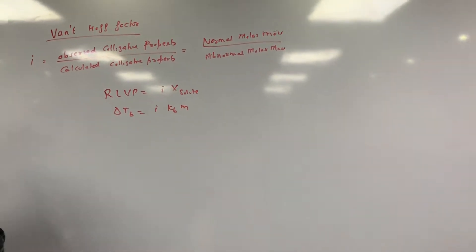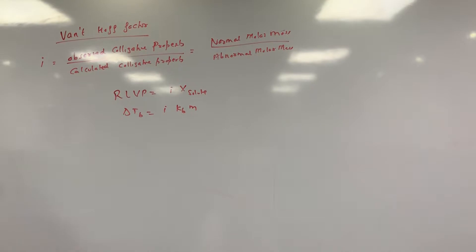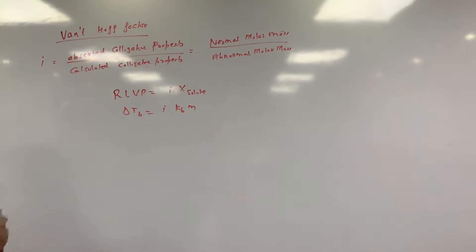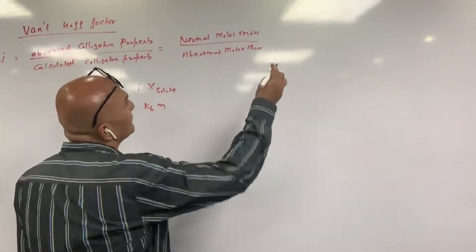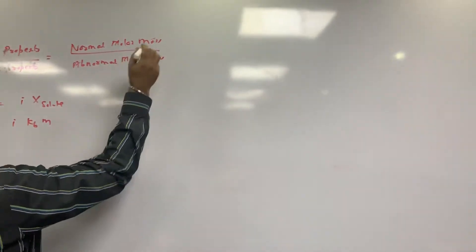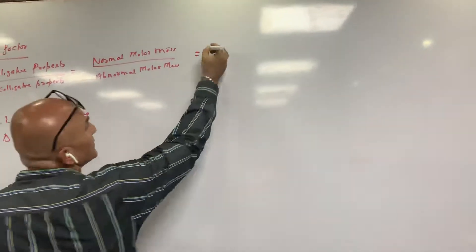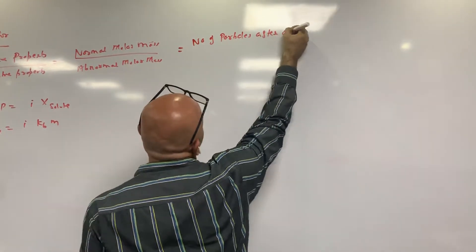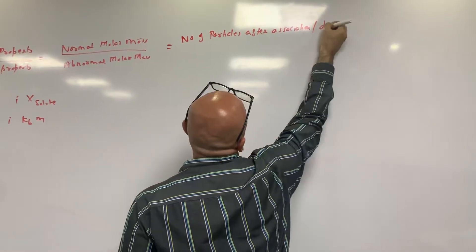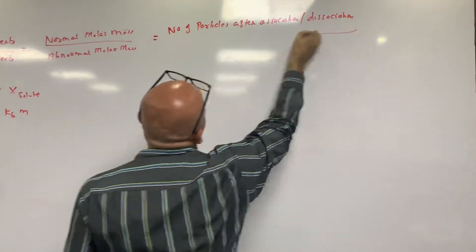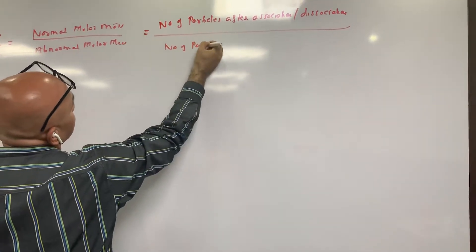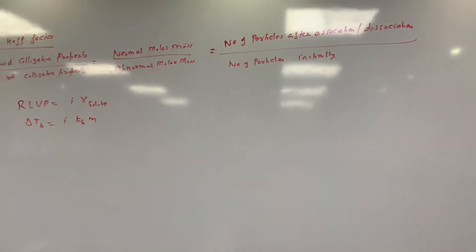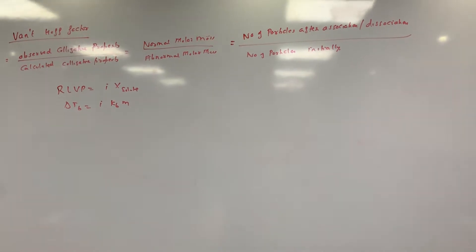Now, in the case where a substance is not completely dissociated or completely associated, you have to use the percentage of dissociation or association. So we define one more definition of i, which you have to remember: i equals the number of particles after association or dissociation divided by the number of particles initially.